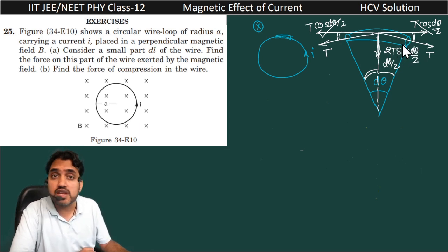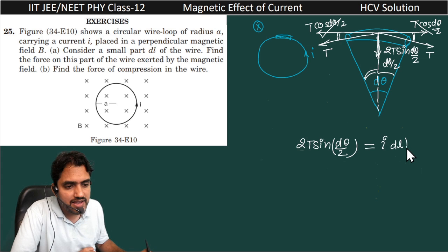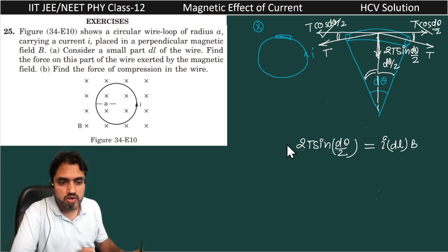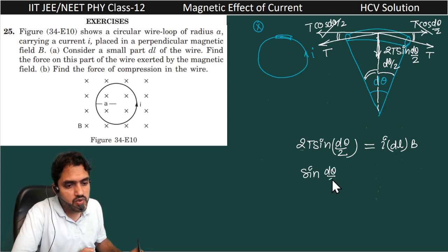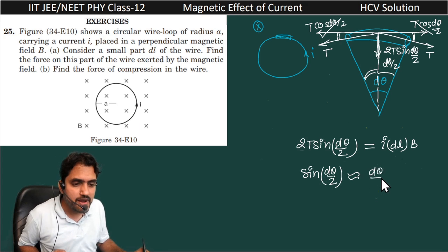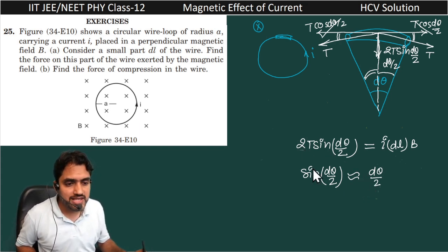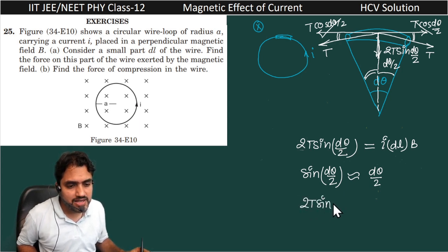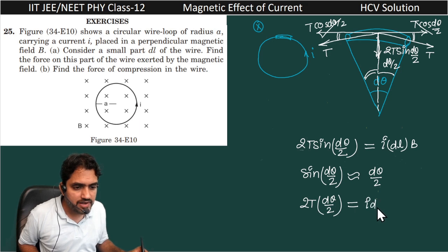What is the reason behind this tension? The tension is due to the magnetic force. So 2T·sin(dθ/2) is equal to the magnetic force, which equals i·dl·B. For a very small differential part, using the small angle approximation, sin(dθ/2) can be written as dθ/2. So this expression becomes 2T·(dθ/2) = i·dl·B, which simplifies to T·dθ = i·dl·B.